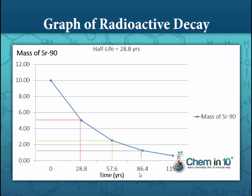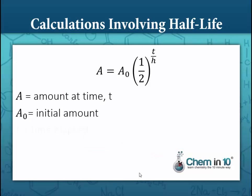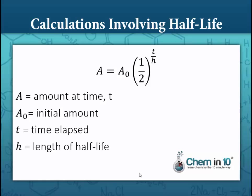And 28.8 years after that, or 86.4 years, only half of the 2.5 grams remain, or 1.25 grams. In algebra, we call this curve exponential. Radioactive decay is an example of exponential decay. It makes sense, then, that to solve half-life problems, we need an exponential equation, and here it is.